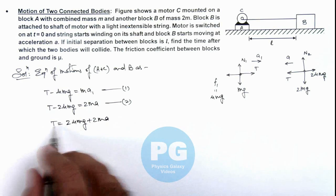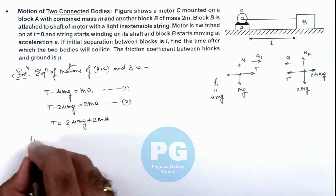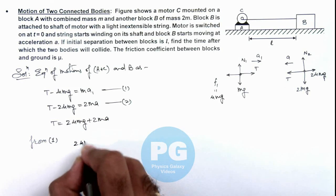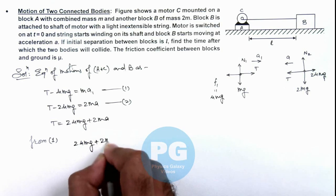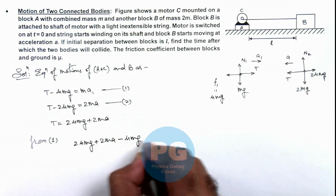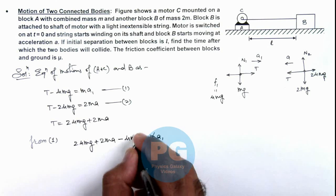So if we have got the value of T in equation 1, on substituting this we can get the value of a1. So we can write from equation 1, this is 2μmg plus 2ma minus μmg is equal to ma1. Here the value of m gets cancelled out.